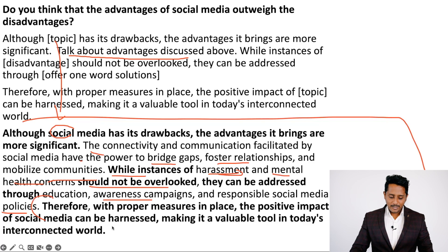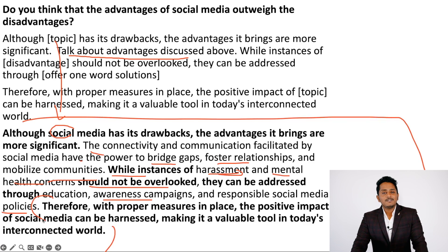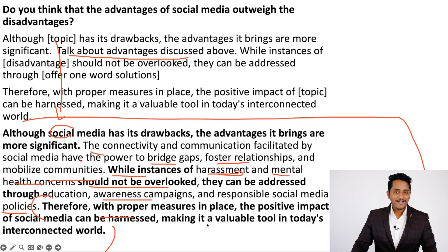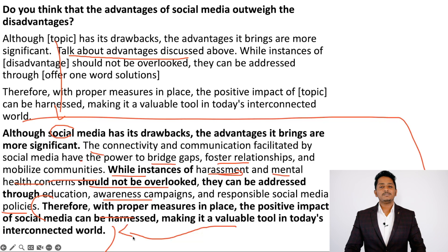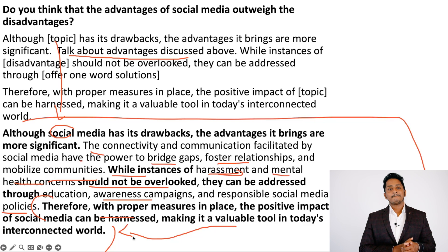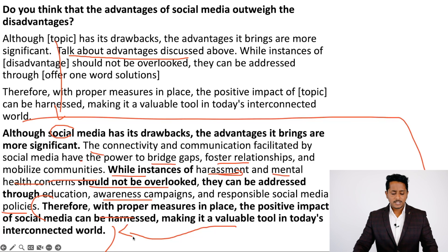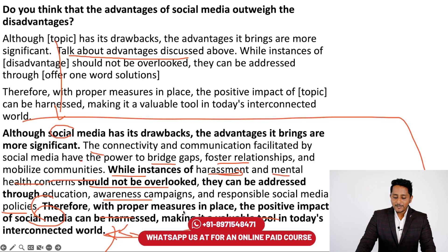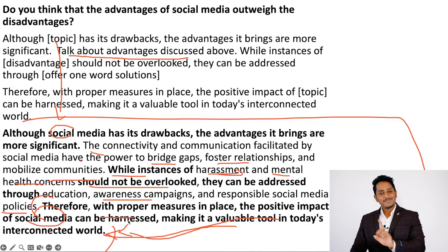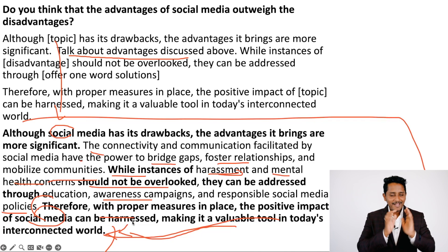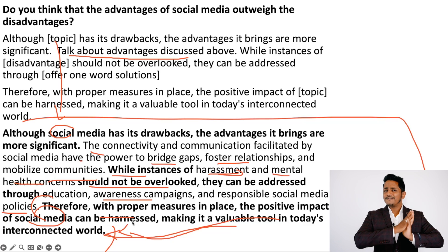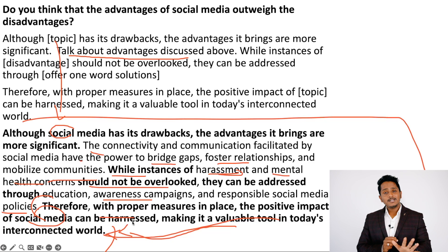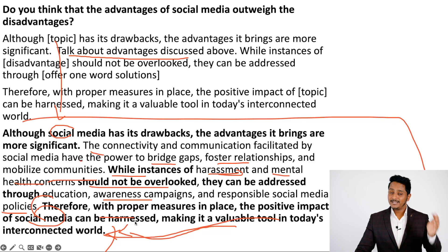'Therefore, with proper measures in place, the positive impact of social media can be harnessed, making it a valuable tool in today's interconnected world.' This last sentence works for any topic — online learning, renewable energy, anything. 'With proper measures in place, the positive impact of online learning can be harnessed, making it a valuable tool in today's interconnected world.' The template has been designed to work for any advantage outweigh disadvantage question — you can blindly trust it.